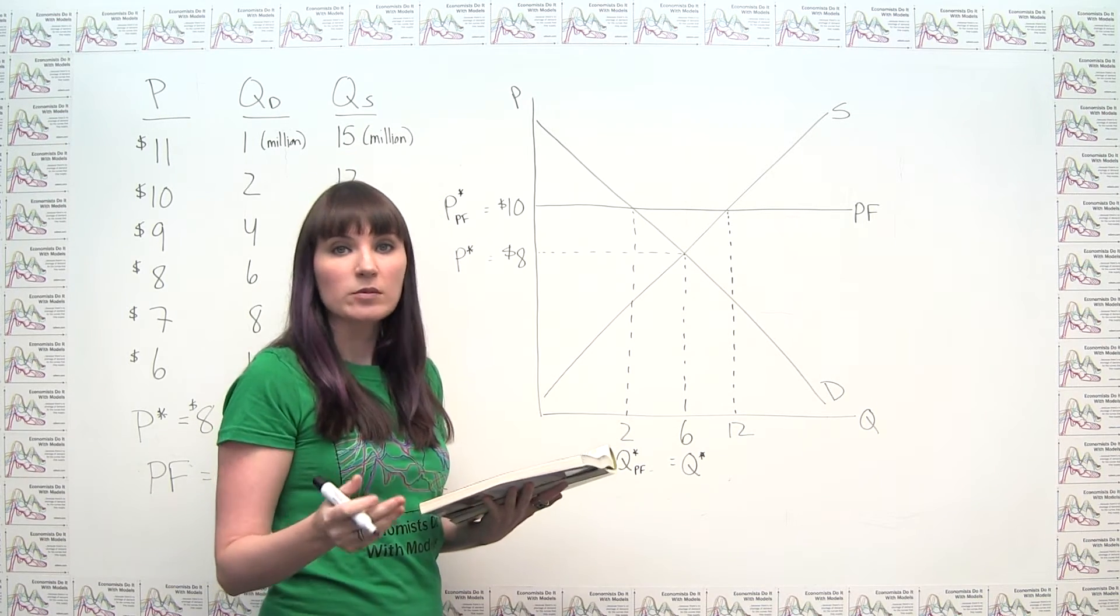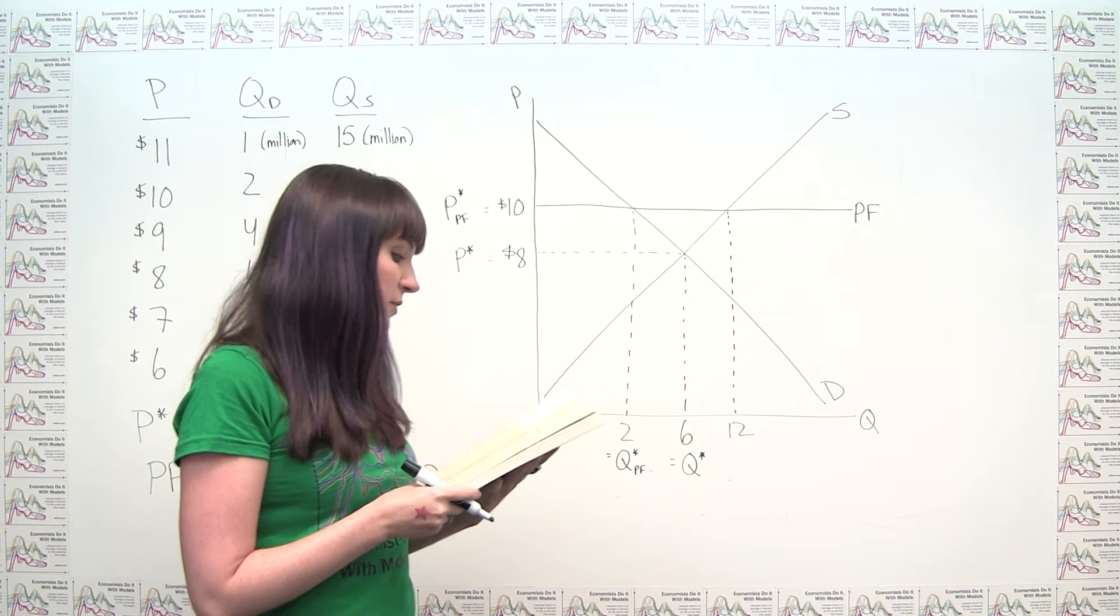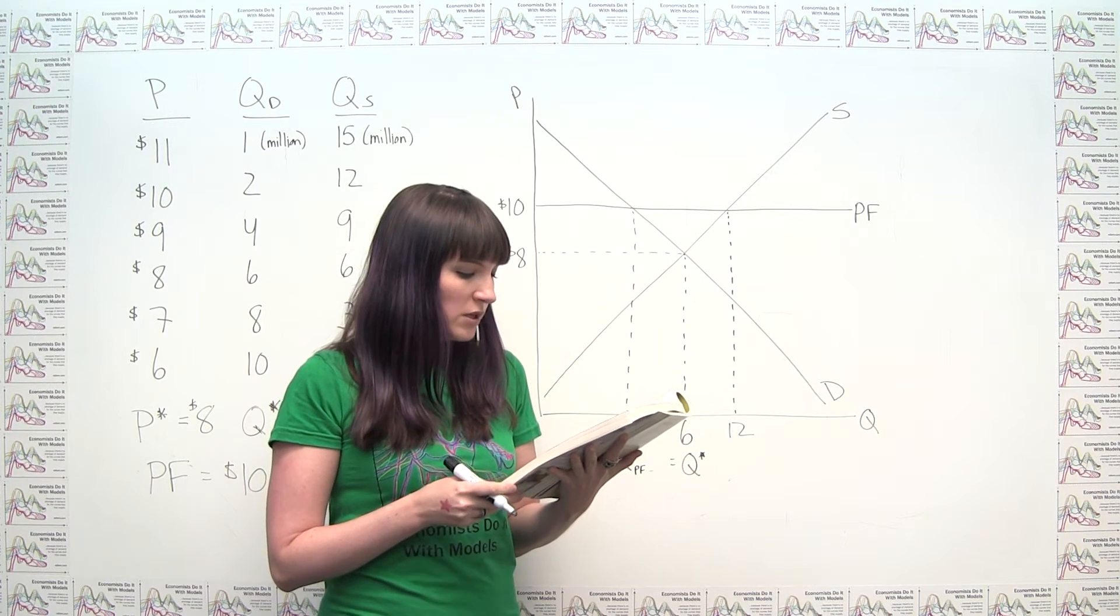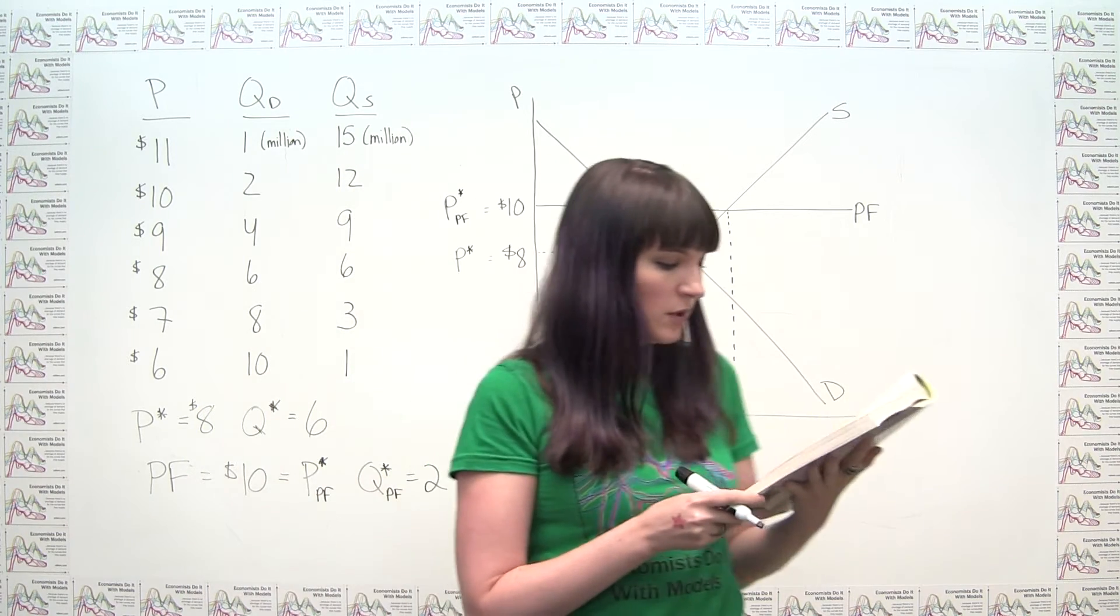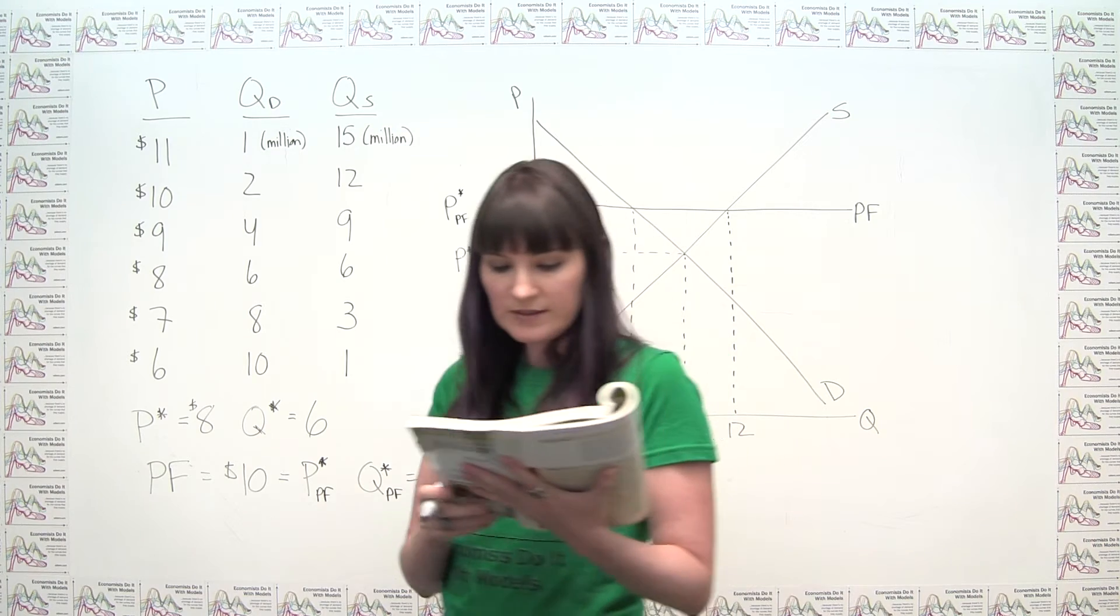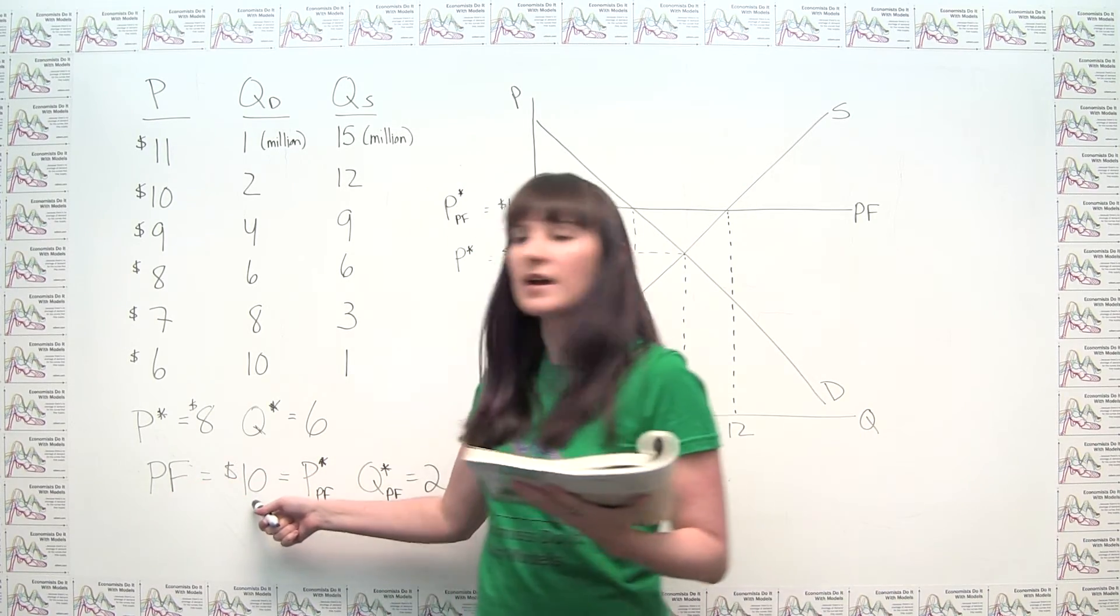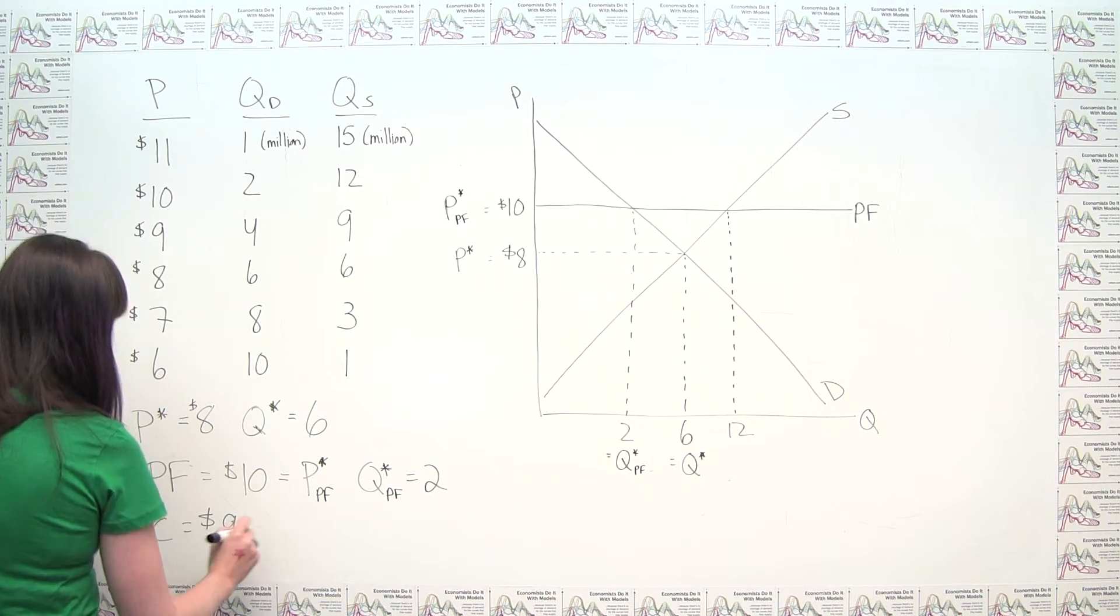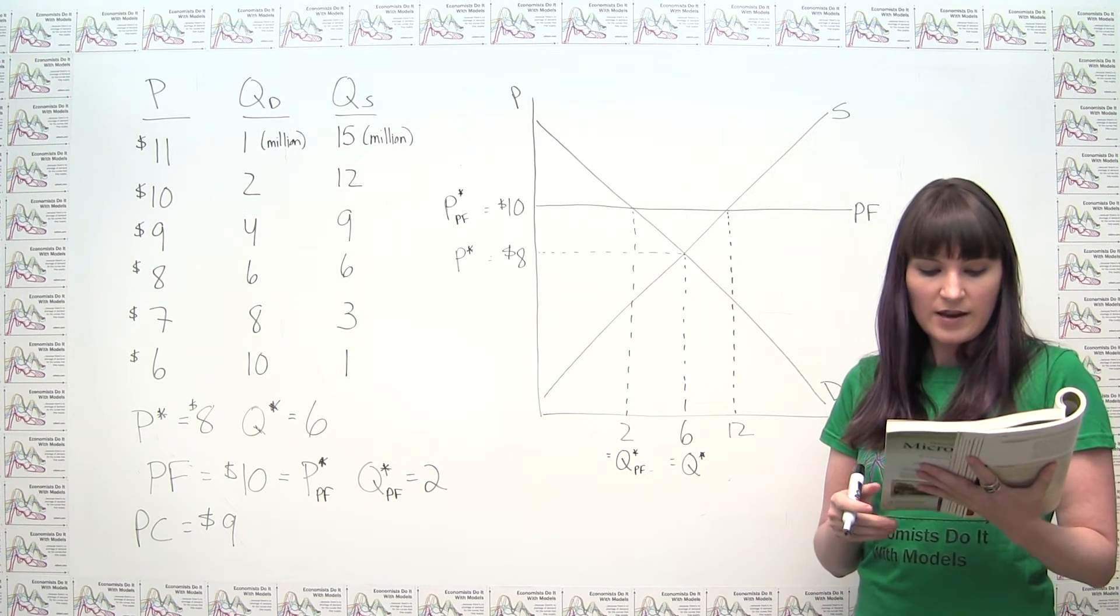Part C says, irate college students march on Washington and demand a reduction in the price of frisbees. An even more concerned Congress votes to repeal the price floor and impose a price ceiling $1 below the former price floor. What is the new market price? How many frisbees are sold? So let's read this carefully. Now we have a price ceiling, which is a legally mandated maximum price. And that price ceiling is going to be set $1 below the former price floor. And we decided that the price floor was set at $10. So this means that the price ceiling would be set at $9. So we want to think about what the market impact of that is. Because we're being asked what is the new market price and how many frisbees are sold.